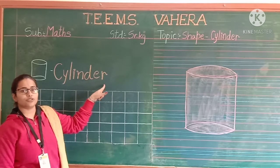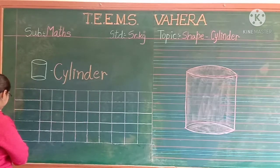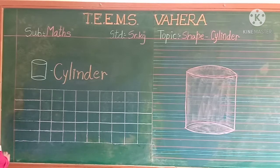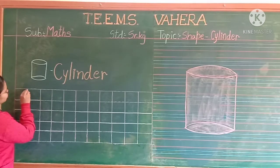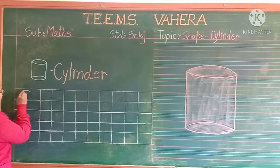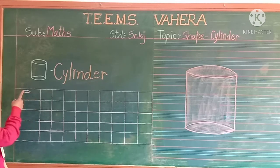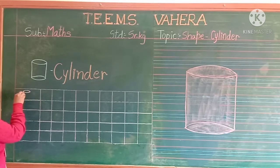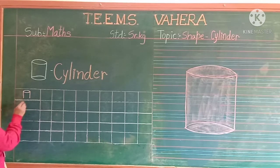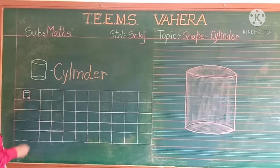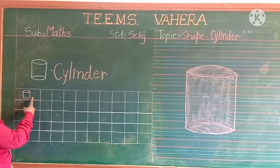Now we are going to write the spelling. First we have to draw the shape of a cylinder. This way you have to make first an oval, then a standing line, then the downside oval. This is the cylinder shape.